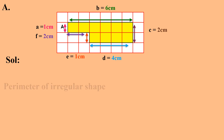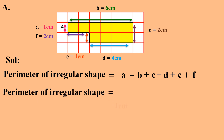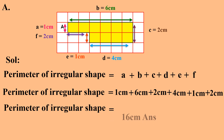Solution: we write the formula — perimeter of irregular shape equals A plus B plus C plus D plus E plus F. Putting in the values: 1 cm plus 6 cm plus 2 cm plus 4 cm plus 1 cm plus 2 cm. Adding all values, the perimeter of the irregular shape equals 16 centimeters. Now you have to solve the rest of the parts yourself.